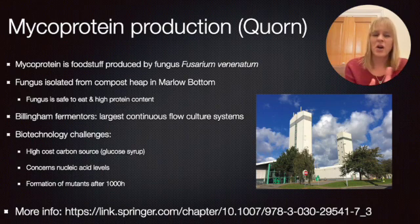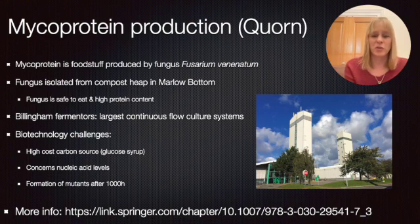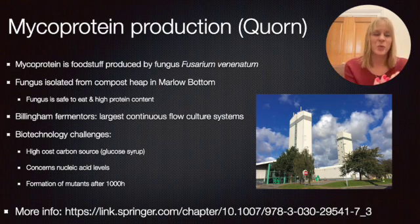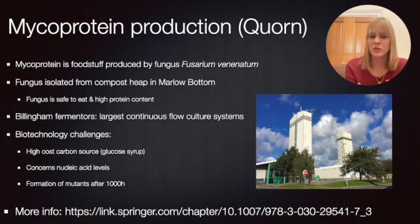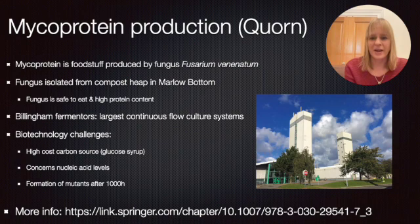There are a couple of challenges within the biotechnology we need to discuss. When it comes to costs, you need to be able to compete in price - and probably actually have a lower price compared to meat - in order to be competitive. The fungi feed on a particular carbon source, in this case a glucose syrup for the original Quorn production process. There are some alternatives, but the glucose syrup is quite high in cost, so people are actively looking at substituting it.